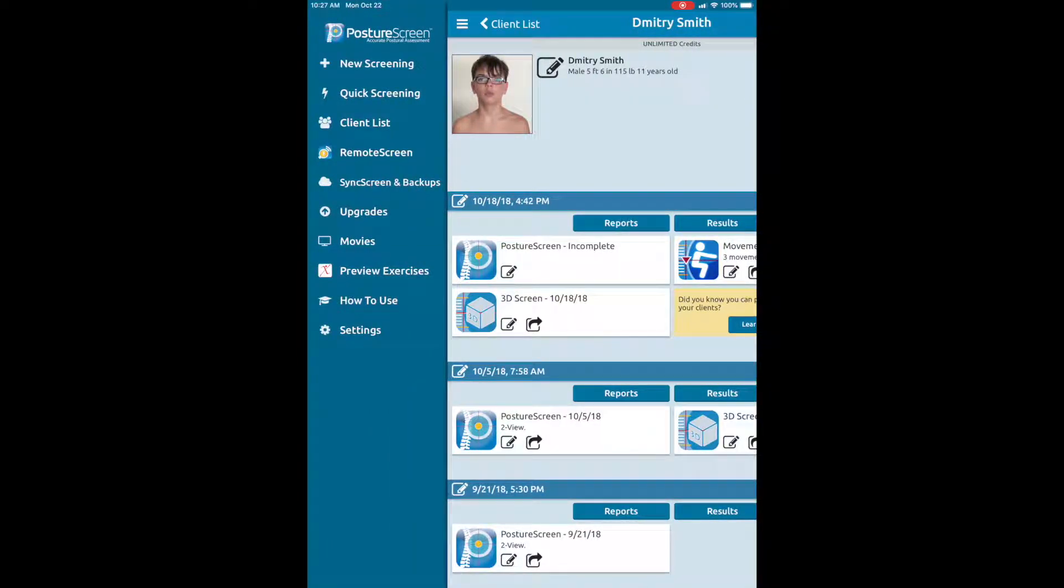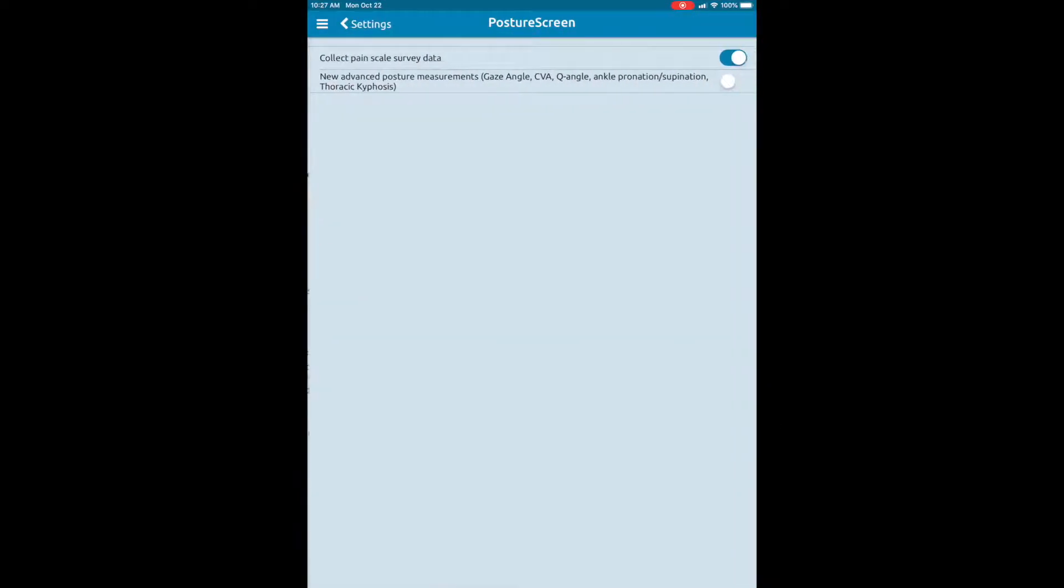So if we go to settings and then we go into posture screen, notice we have to turn those measurements on right here, otherwise we'll just do the traditional four view assessments.